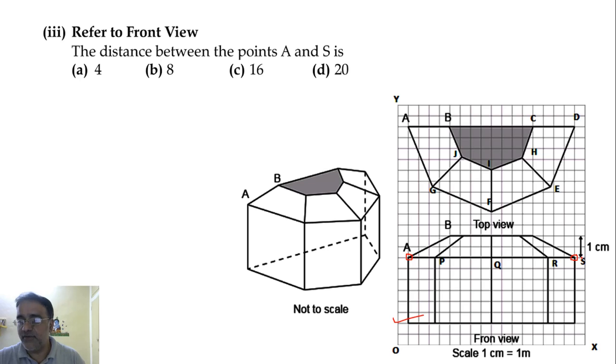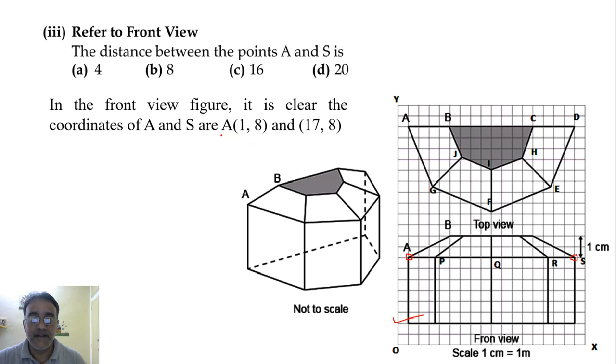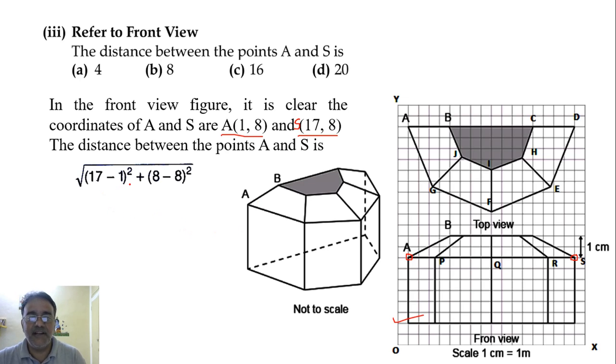So (1, 8). And the y-coordinate for S is also the same, that is 8, and let us count the x-coordinate: 1, 2, 3, 4, 5, 6, 7, 8, 9, 10, 11, 12, 13, 14, 15, 16, 17. So A's coordinate is (1, 8) and S's coordinate is (17, 8). Now we need to find the distance between these two points. So we use the distance formula: square root of (x2 - x1)² + (y2 - y1)². So (17 - 1)² + (8 - 8)² is 0, and this gives us square root of 16², which will be equals to 16.